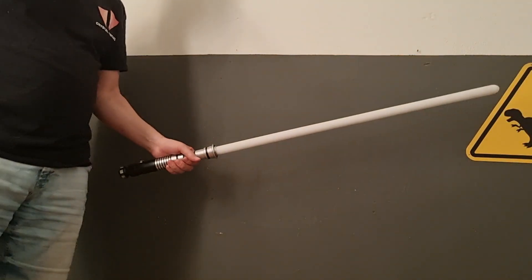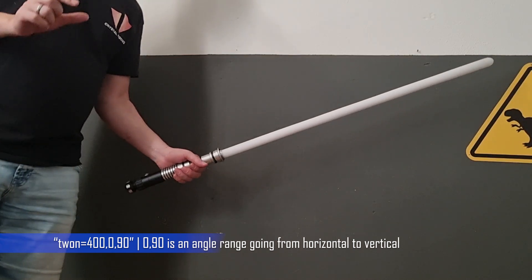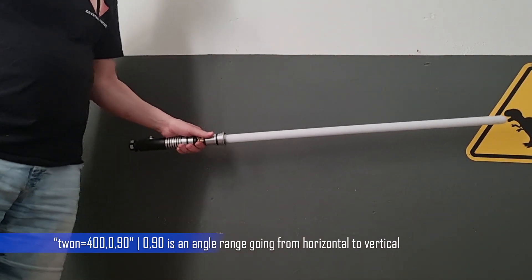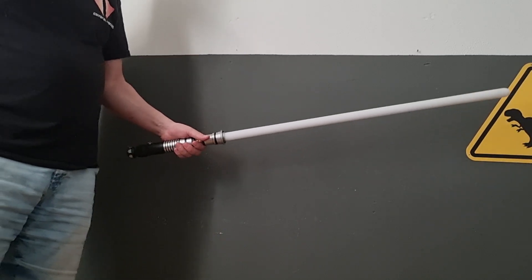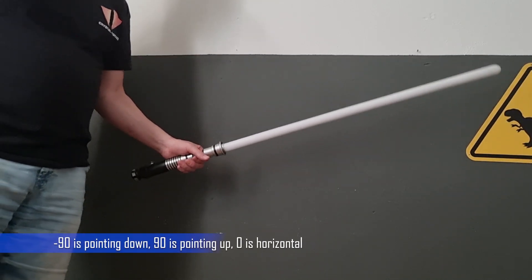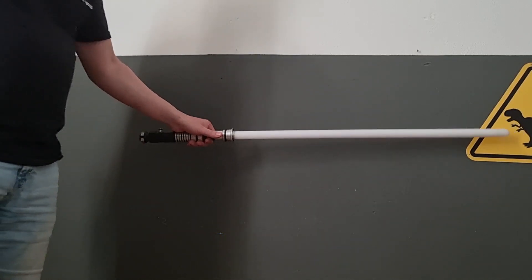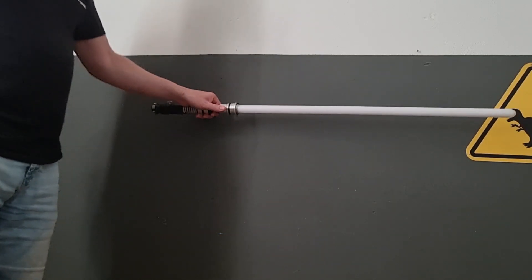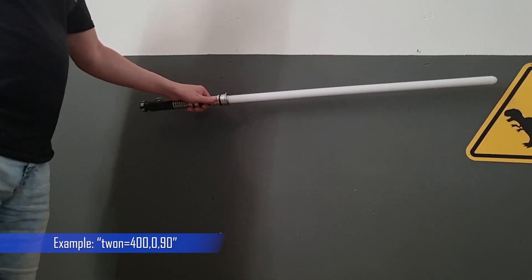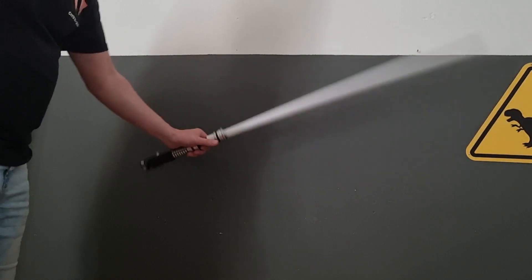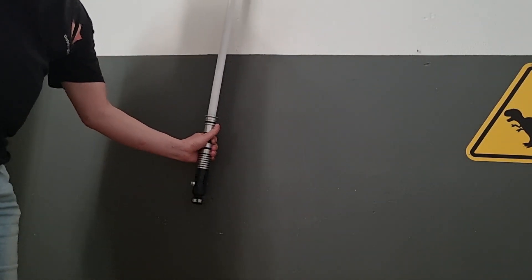The second and third numbers together create an angle range. The minimum number is minus 90 and the maximum number is 90. So if you set the second number to zero and the third number to 90, this will create a range going from horizontal to pointing upwards.